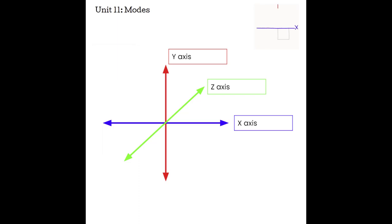Way back in Unit 1, we talked about how a graph looks. We have the y-axis as the vertical line, the x-axis as the horizontal line, and the z-axis representing more of a depth line, which creates the 3D world.